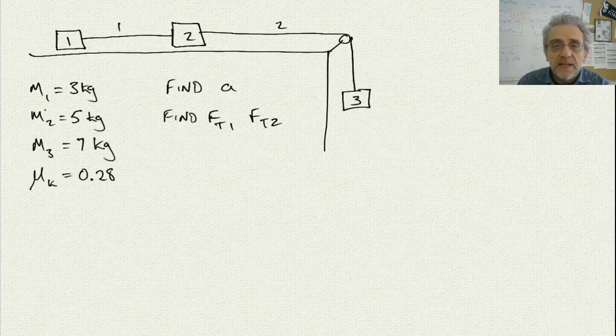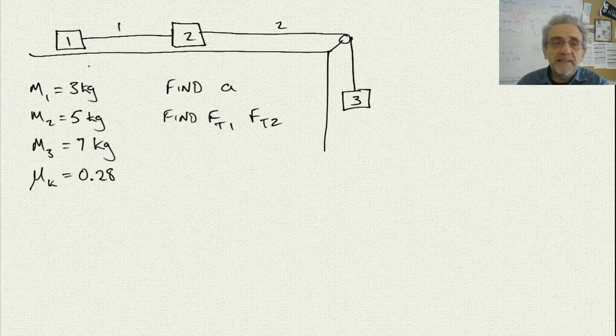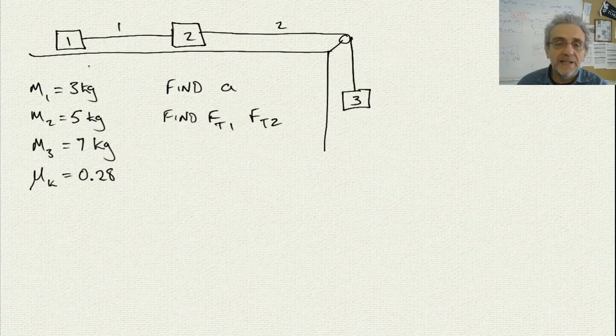We've got two masses on top of a table and we have one hanging over the side. Now we have friction in this case and we have friction both on mass number one and mass number two. There is no friction on mass number three, not because it's not touching the side of the table, but rather because there is no normal force pushing mass number three against the side of the table. In other words, gravity doesn't act sideways, it acts vertically.